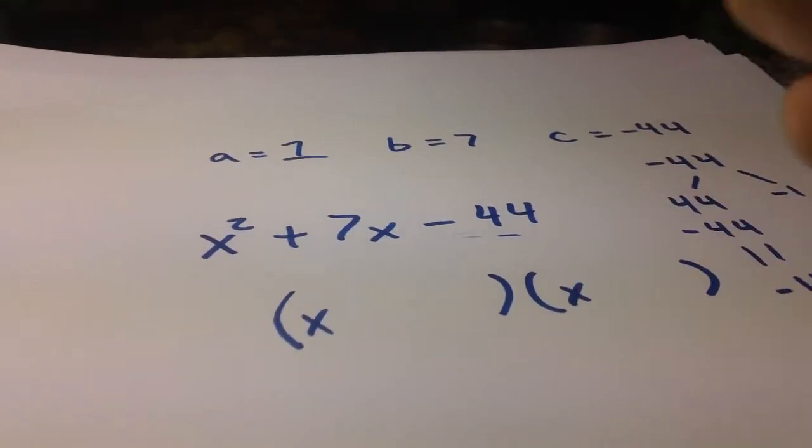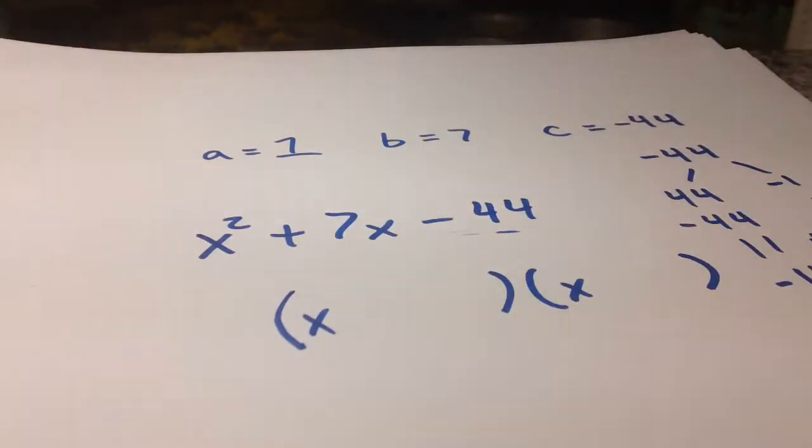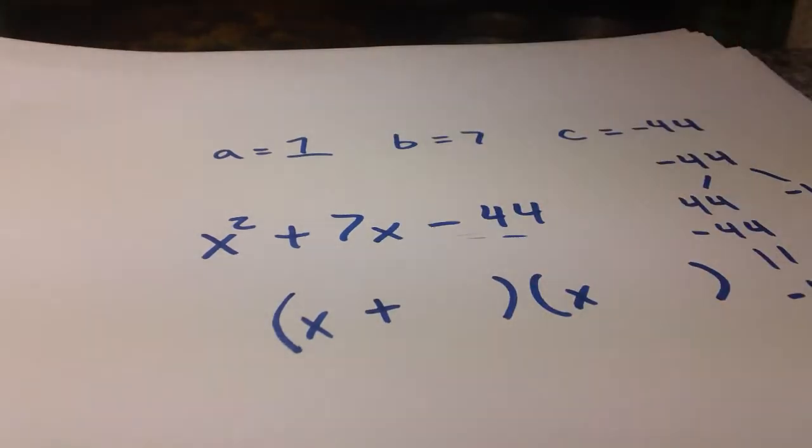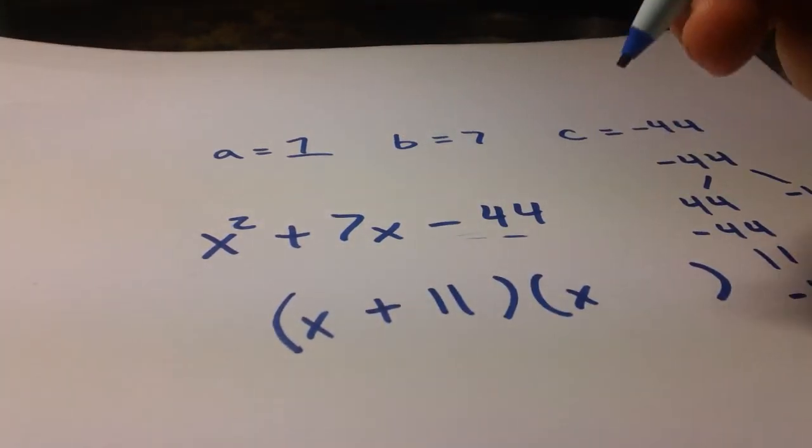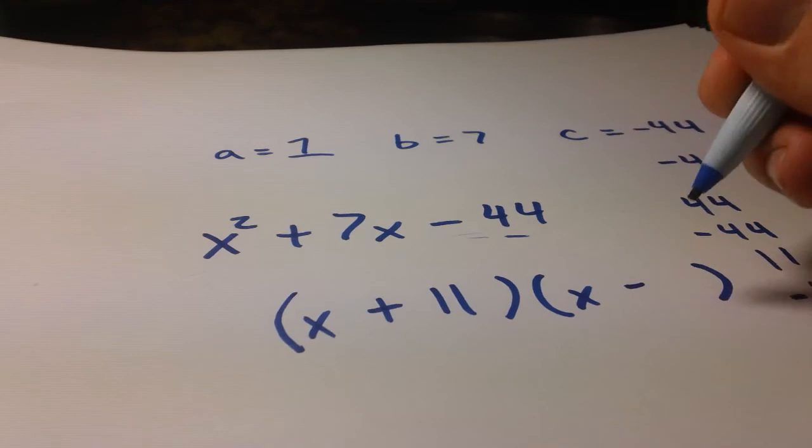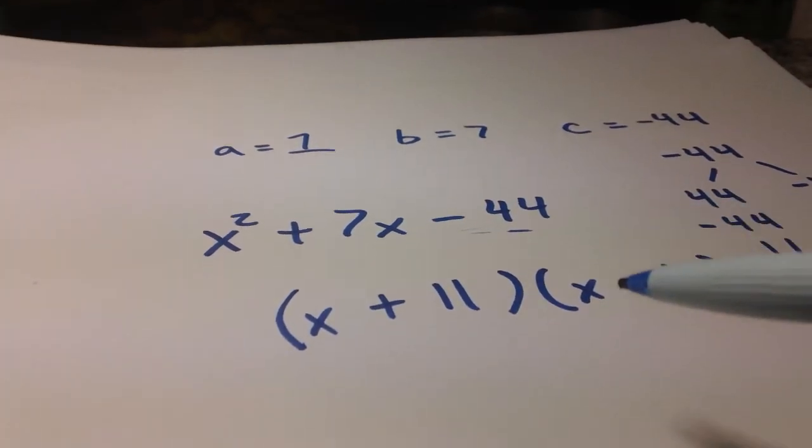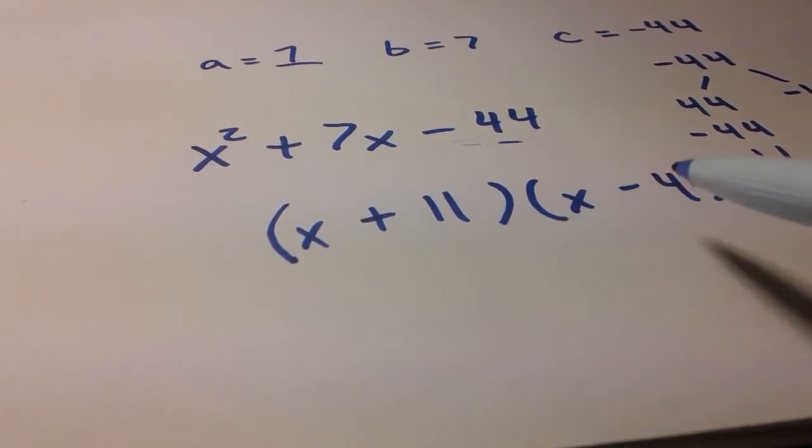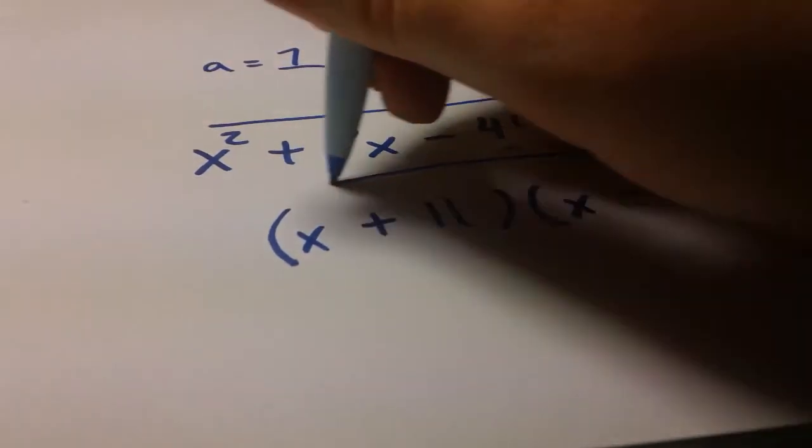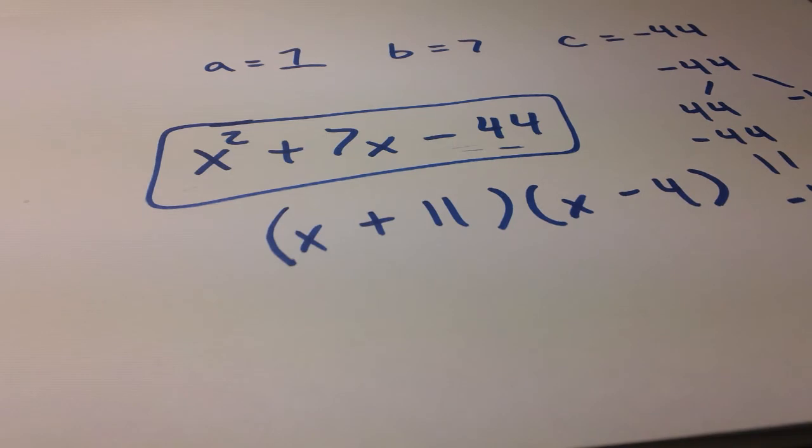So, x here is going to be plus 11. And then x here, minus 4. Yet again, does not matter the order we have these in, but those are our two factors of this original quadratic equation.